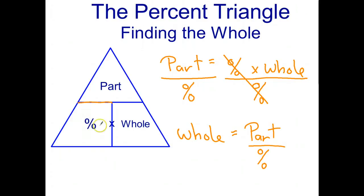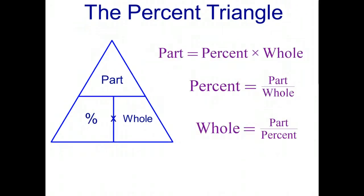So to summarize, in order to find the part in a percent question, multiply percent times whole, which is shown there in the triangle. To find the percent, you go part divided by whole, and to find the whole, you go part divided by percent.